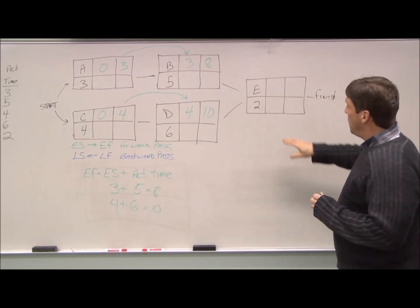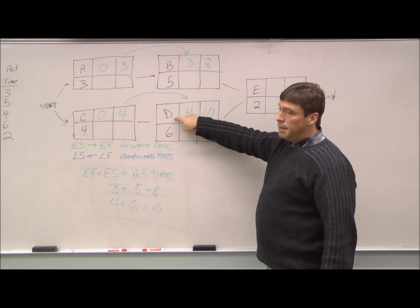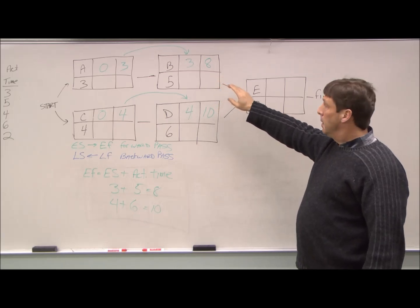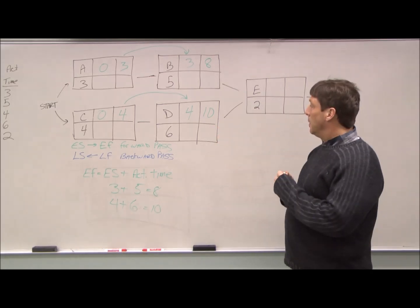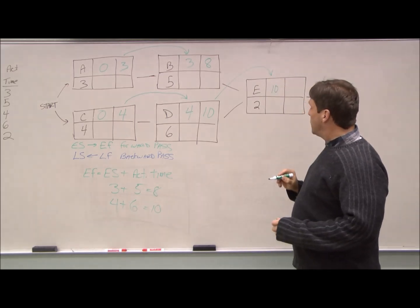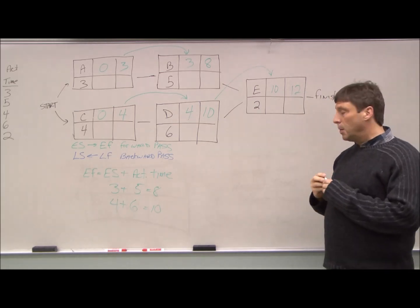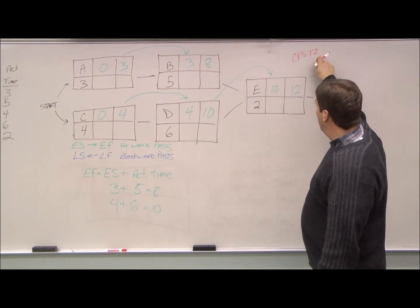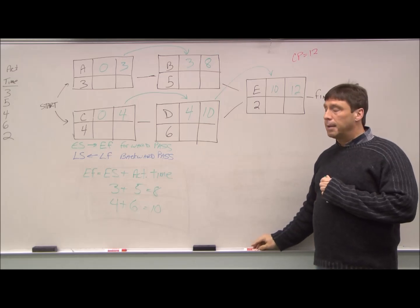All right. Next, we move on to E. E has two items feeding it, both B and D. With this, we can't begin E until both these operations are complete. So even if B is done in eight weeks, we still have to wait the ten weeks for D. So we take the larger of these two, and that becomes our earliest start. Ten plus two is twelve. Now this is where I also told you to keep an eye on our critical path. Because you notice our critical path equals twelve before. These two numbers should agree because we basically mapped out the critical path in time here.